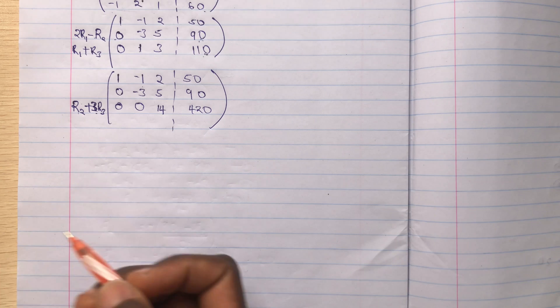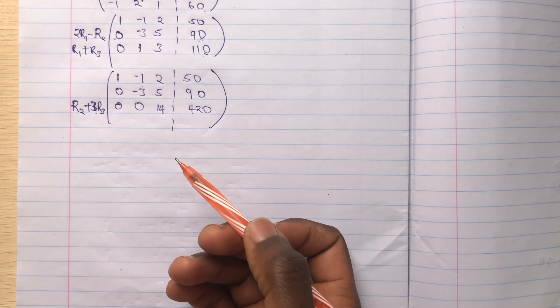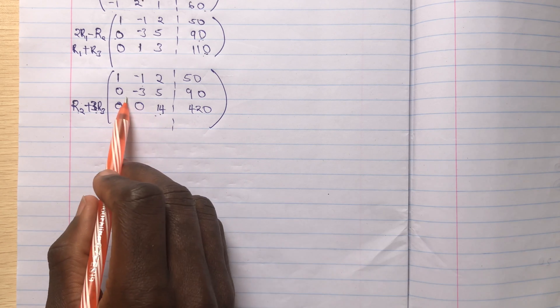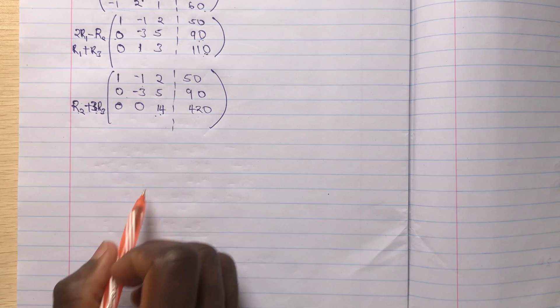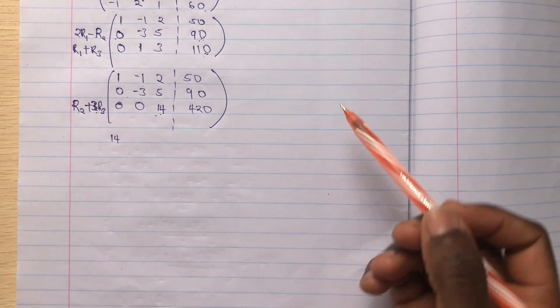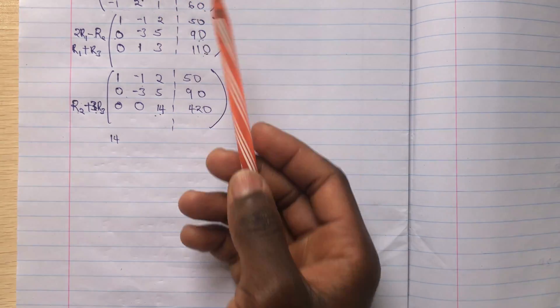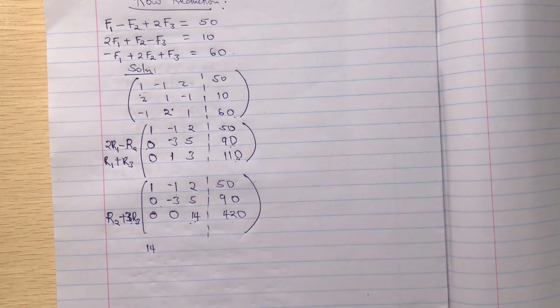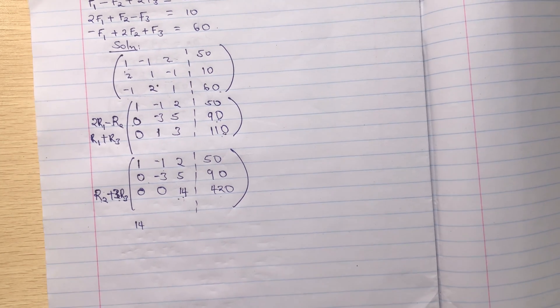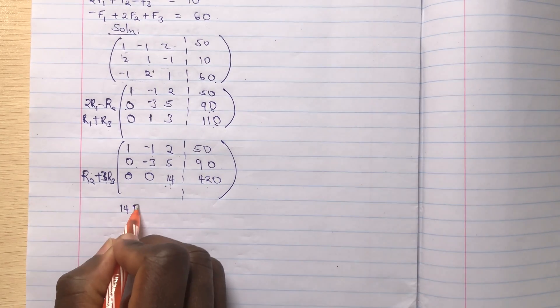So right here we have almost finished. We have only one unknown. So what we'll do is just equate this to this, this to this, and this to this. So I have 14. So this 14 corresponds to F3. So I'll just equate. So I have 14 F3 being equal to 420.